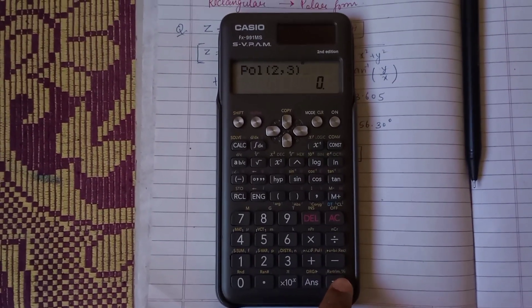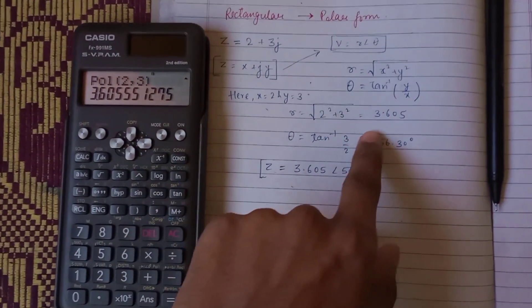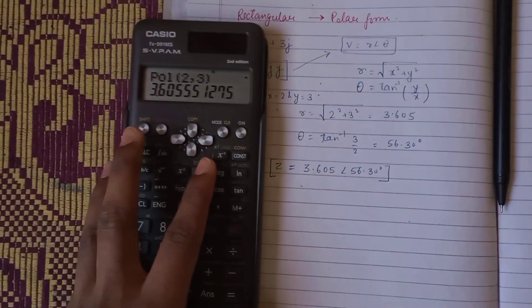Press equals and you will get the r value, which is 3.605. This is correct.